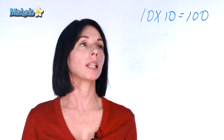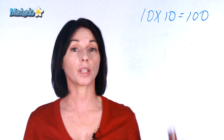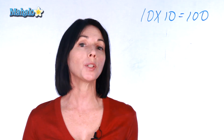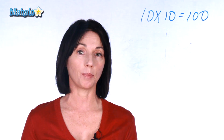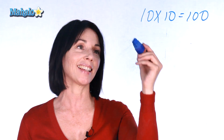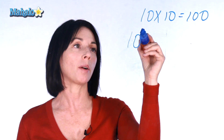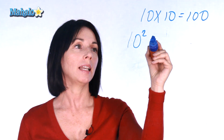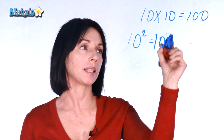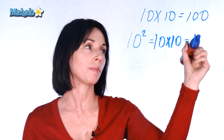So let's say we multiply 10 times 10. That gives us 100, but there's another way to write 10 times 10 using an exponent, and it's like this: 10 to the power of 2 is equal to 10 times 10, and that equals 100.